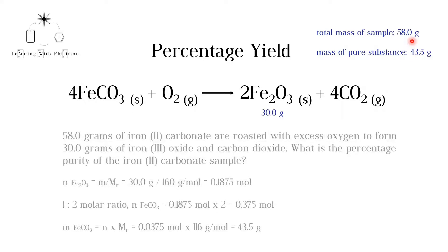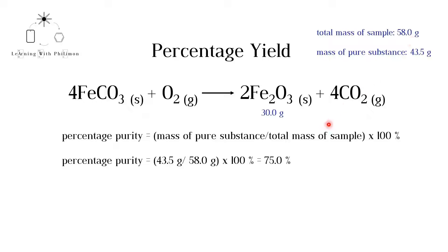Substituting these two values into this equation, we get a percentage purity of 75%. 75% of the sample actually consists of iron II carbonate and can react to form the desired product.